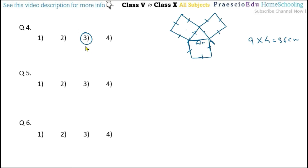Question number 5: Deepika takes one round of a square garden of length 80 meters. Puja takes one round of a rectangular garden of length 100 meters and breadth 70 meters. What is the difference in the distance they covered?